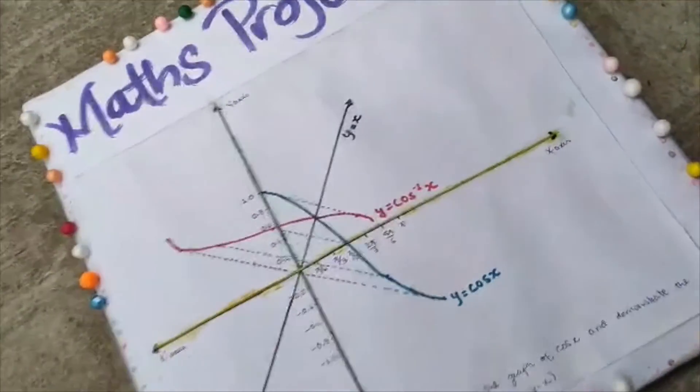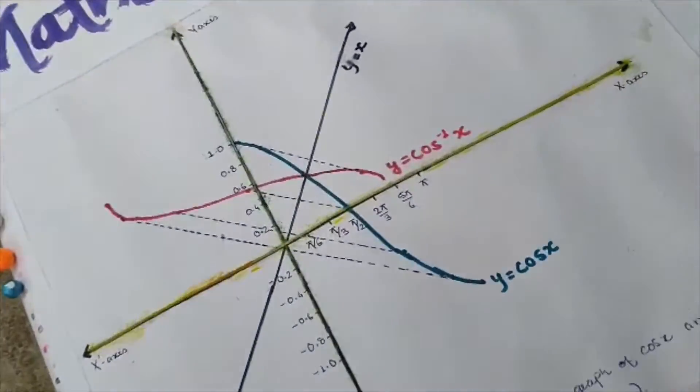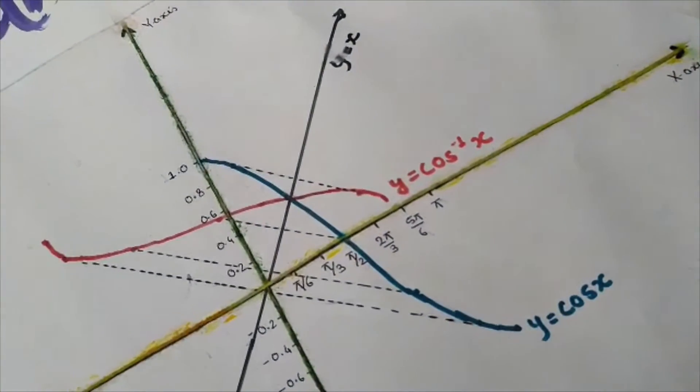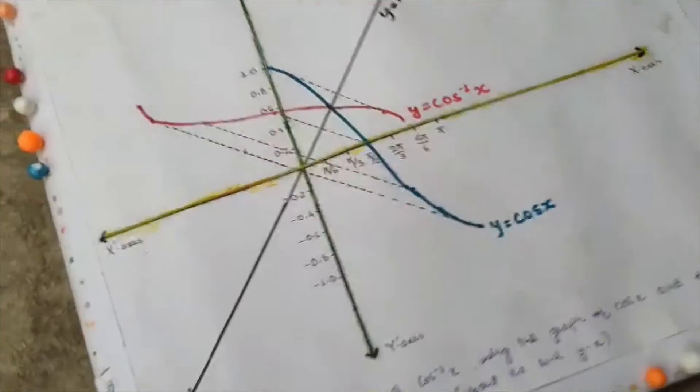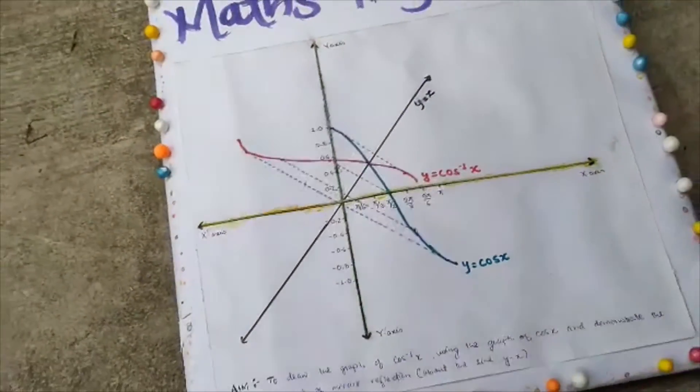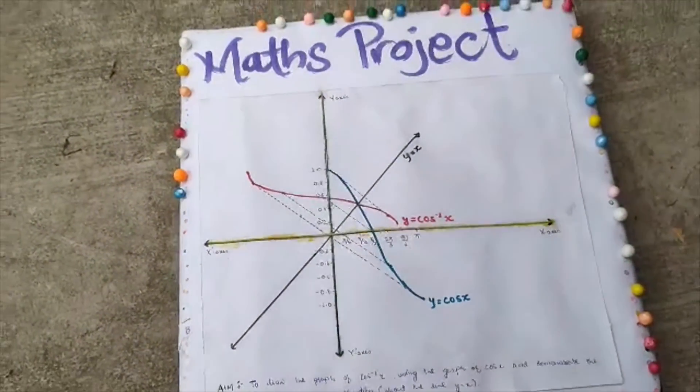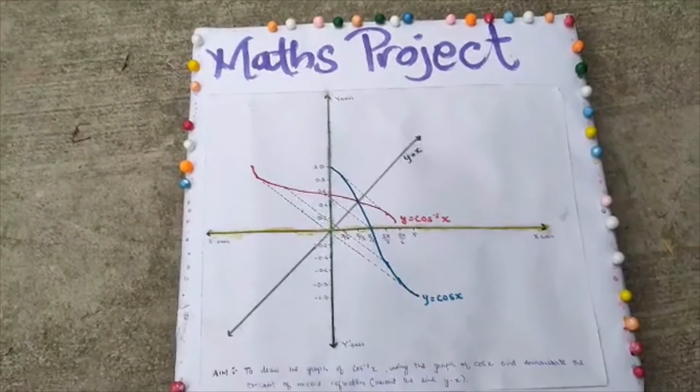Here, cos inverse x graph is shown from y equals to cos inverse x with red line as you can see in the project.